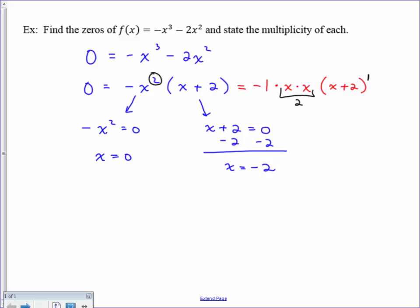In other words, that factor of x is repeated twice, and then this factor of x plus 2 is written once. Those powers on the factor are called multiplicity.